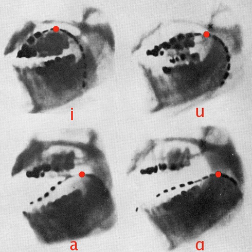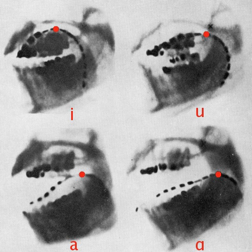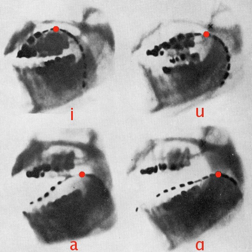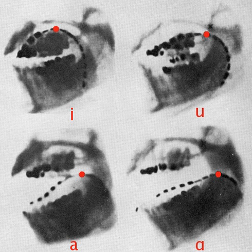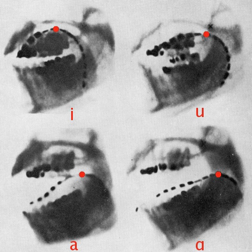A pulmonic consonant is a consonant made by obstructing the glottis or oral cavity and either simultaneously or subsequently letting out air from the lungs. Pulmonic consonants make up the majority of consonants in the IPA, as well as in human language. All consonants in the English language fall into this category. The pulmonic consonant table is arranged in rows that designate manner of articulation and columns that designate place of articulation.